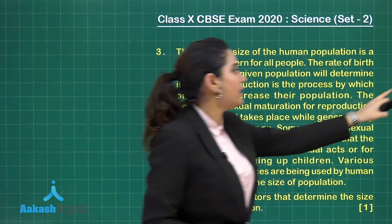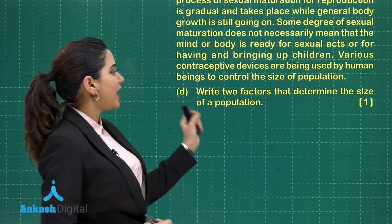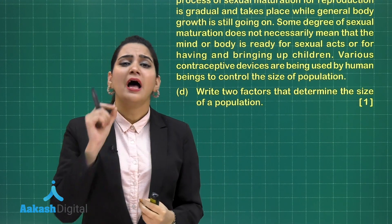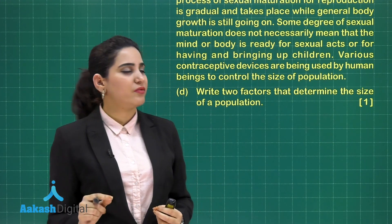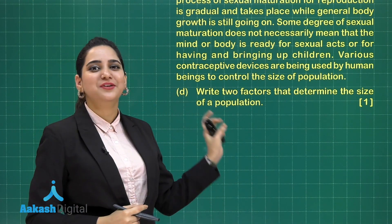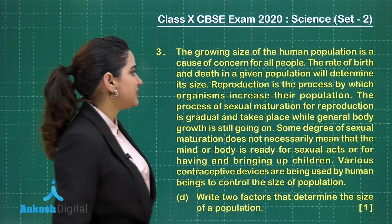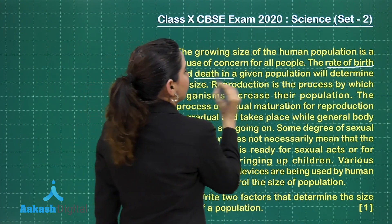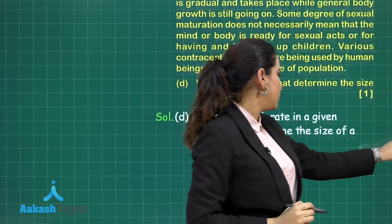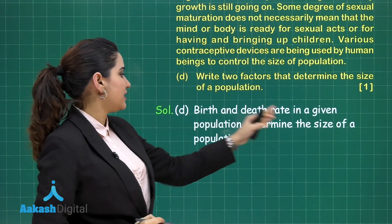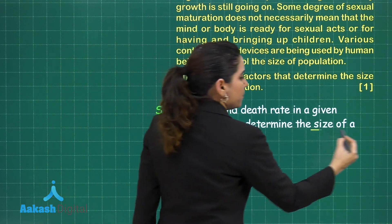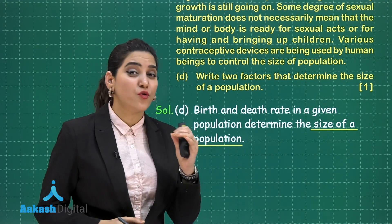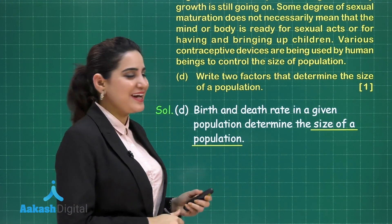Now let's take up part 4C, which asks: write two factors that determine the size of a population. Though two factors are asked, half a mark will be given for each factor. The answer to this question lies in the paragraph itself — there are two parameters: the rate of birth and rate of death in a given population. Birth rate and death rate in a given population determine the size of a population. This was all about question number 3, and if you answer all four parts completely, you will grab all four marks.